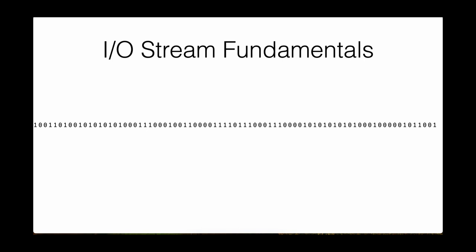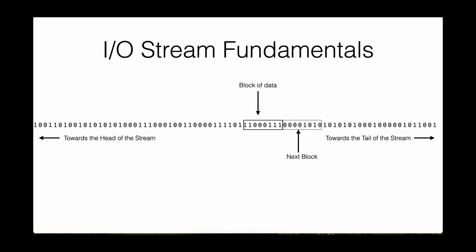Conceptually, a stream could be thought of as never-ending data, like a stream of water — there is a start and somewhere an end. We work on a block of data and when we are done we move on to the next block. This block is very well defined and is of a specific size. To know when the stream ends, Java uses a special value of minus 1, also known as End Of File (EOF), so the program knows it has reached the end of the stream and should stop reading.